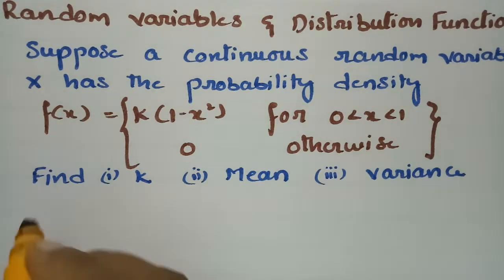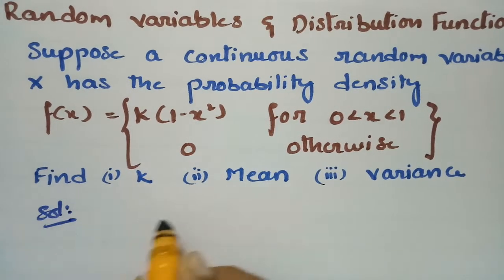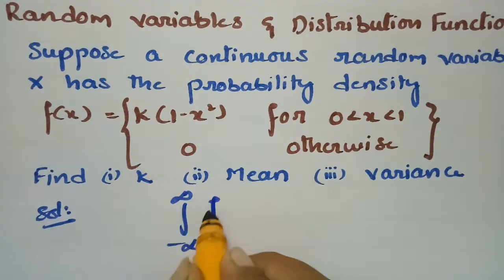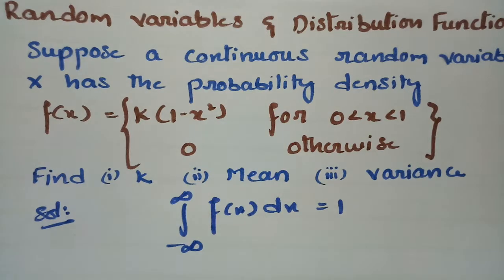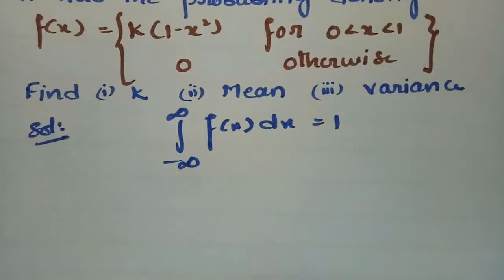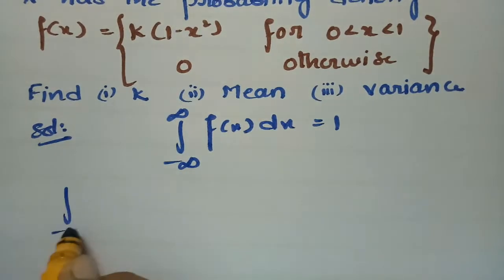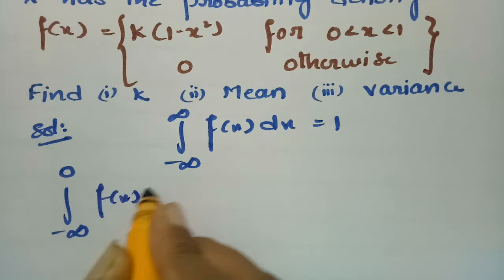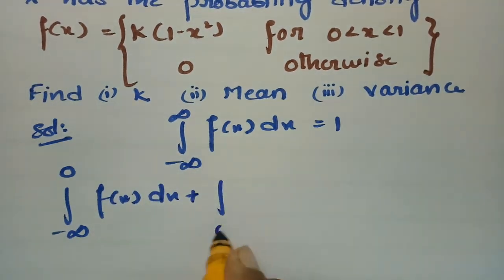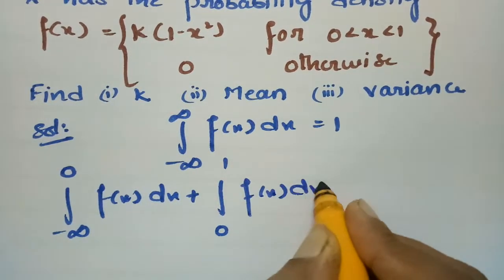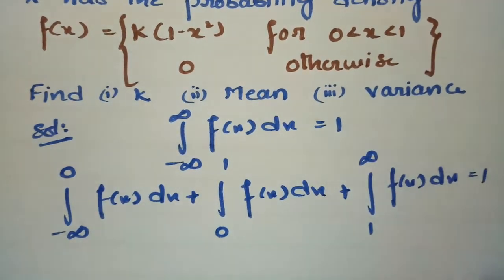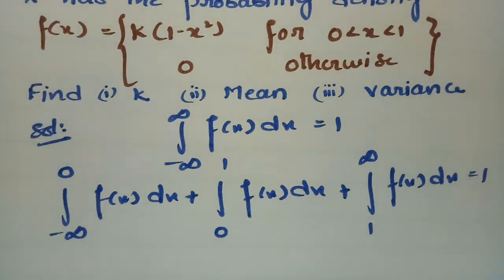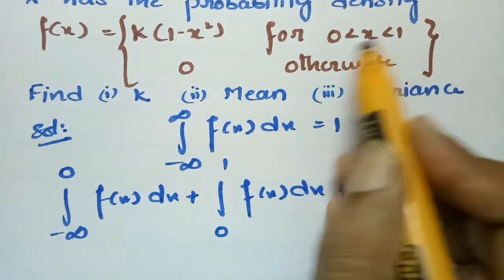To find the value of k, we use the fact that the total probability is always equal to unity. So we split the integral from minus infinity to infinity into three parts: minus infinity to 0, 0 to 1, and 1 to infinity of f(x) dx, all equal to 1.